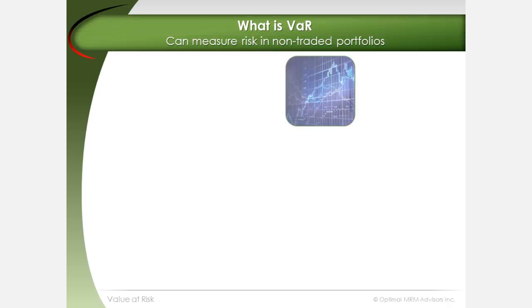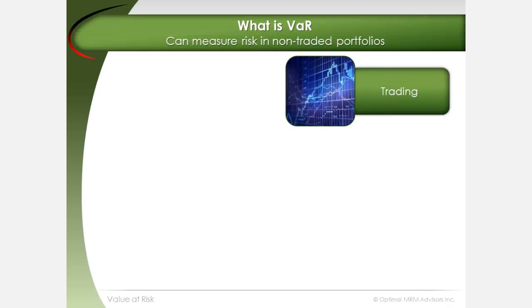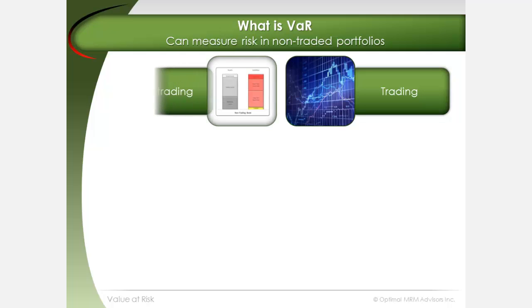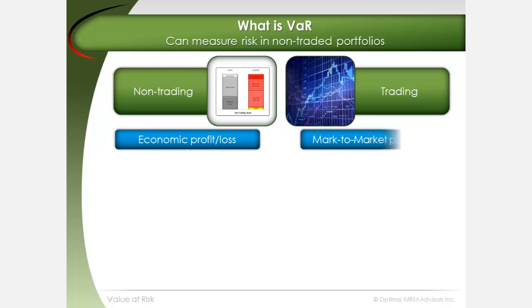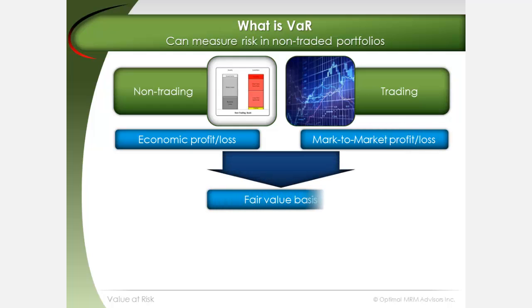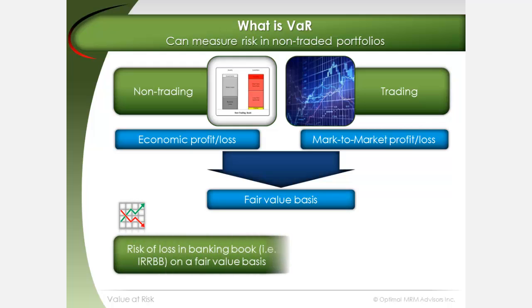VAR is typically used to measure the risk of loss in trading portfolios. It can, however, be used in a non-traded book setting. A bank's mortgage loan book is an example of a non-traded banking book with a potential for significant interest rate risk. Economic loss measures the risk of loss as though the portfolio had been accounted for on a fair value basis. The risk of banking book economic loss due to interest rate volatility can be measured using VAR techniques.